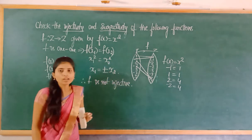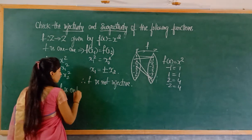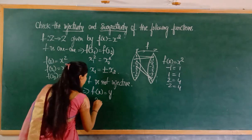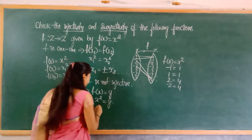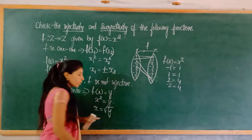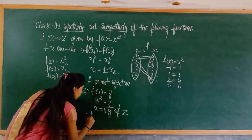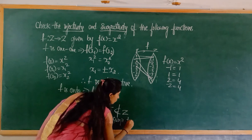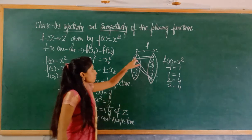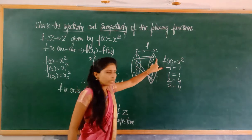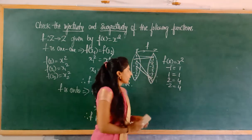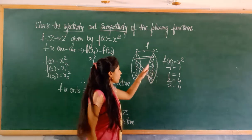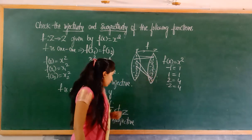Now check onto for f(x) = x², Z to Z. The onto condition is f(x) = y, so x² = y, meaning x = √y. But √y does not belong to integers. Also, negative values in the co-domain will be left with no pre-image, since squares are always positive. Many elements will be left in the co-domain. Therefore f is not surjective.